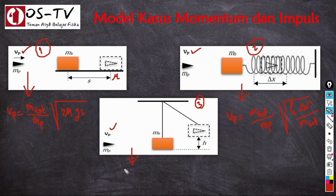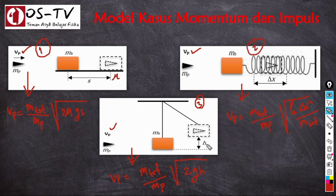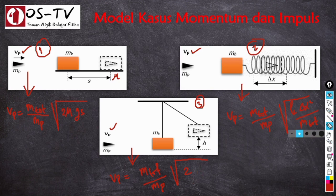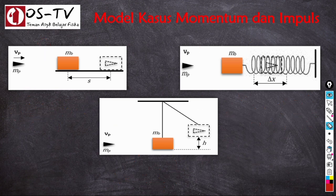Rumus cepat untuk kasus 3 adalah: VP = (m_total / m_peluru) × √(2GH). Sekarang kita gunakan beberapa rumus cepat ini untuk menyelesaikan kasus-kasus tentang momentum dan impuls.